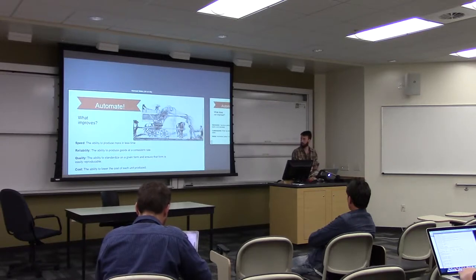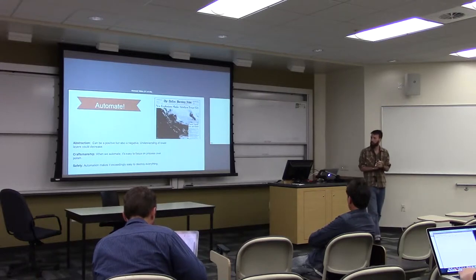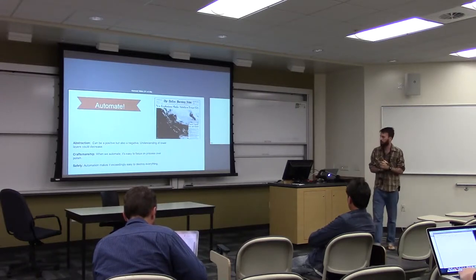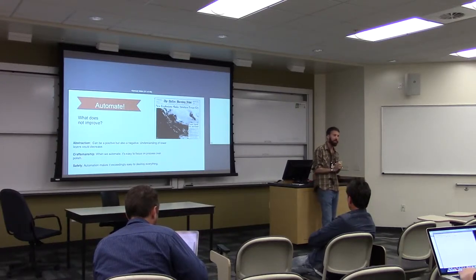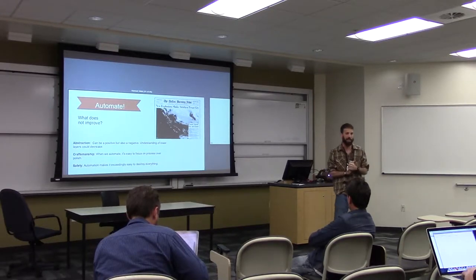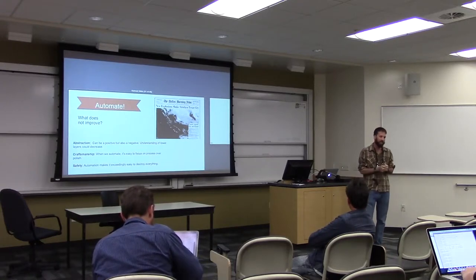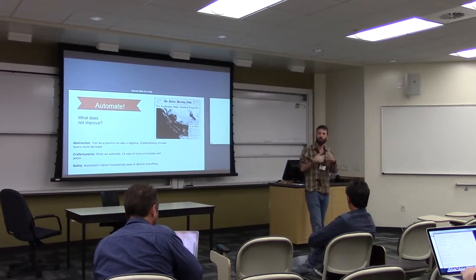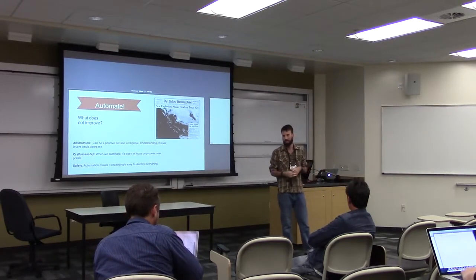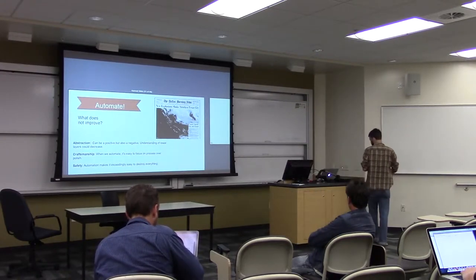And we should look at what those trade-offs are and be honest about what they might be. There are things that do not improve when we automate them potentially. One of them is abstraction. Abstraction, it can be a positive. Computer science has a long history of abstraction. We've been doing this now for 40 plus years. We've abstracted away hardware. We've abstracted away low-level assembly. We've even started to abstract away system calls in C.